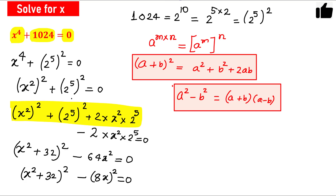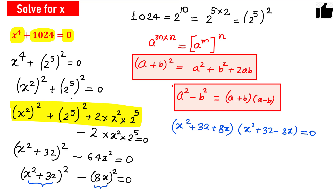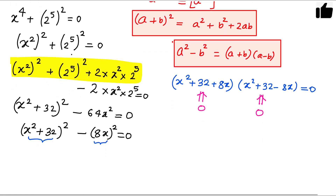If you remember the formula a² minus b² equals (a + b)(a − b), so let us factorize using this formula. Here a is (x² + 32) and b is 8x. So we get (x² + 32 + 8x) times (x² + 32 − 8x) equals 0. So now we have two possibilities: either the first factor is 0 or the second factor is 0, giving us two separate quadratic equations to solve.